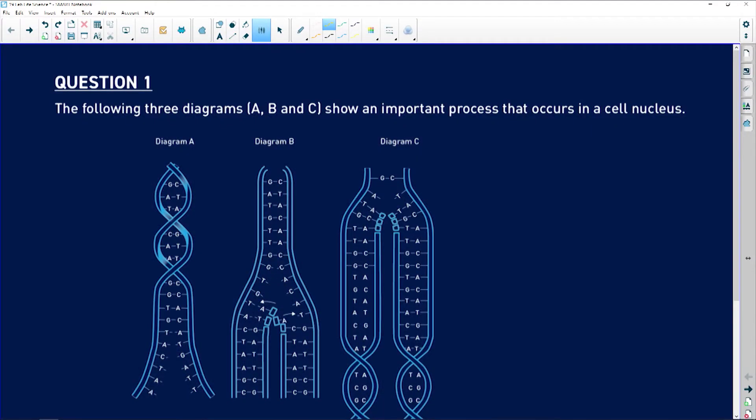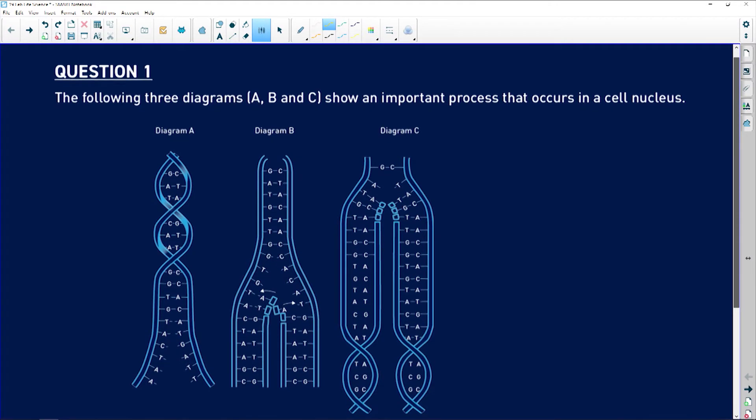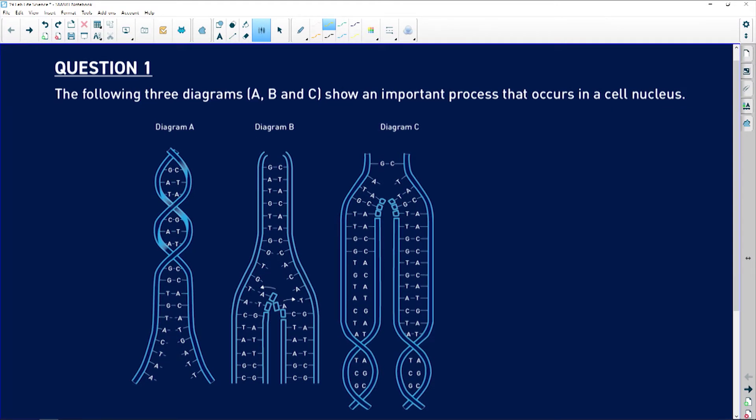Let's look at question one. The following diagrams A, B, and C show an important process that occurs in a cell nucleus. If we have a look at this, we've got diagram A, diagram B, and diagram C. In diagram A it's twisted, then it untwists and starts to open up.